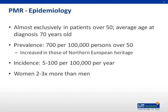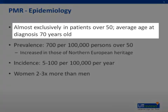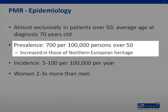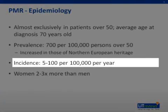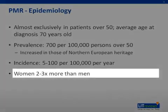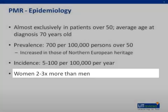Let's talk about the epidemiology of PMR. The disease is found almost exclusively in patients over 50 years old, with the average age of diagnosis being 70 years old. The prevalence of disease is approximately 700 per 100,000 persons over 50 years old. Prevalence is increased in patients of northern European heritage. The incidence is between 5 and 100 per 100,000 people per year. Women tend to be affected more than men at a ratio of 2 to 3 to 1.